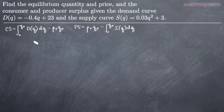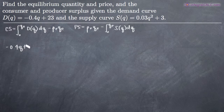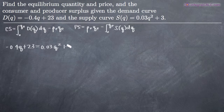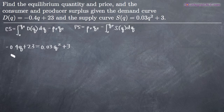The way that we'll do that is by setting the demand and supply curves equal to one another. So we'll get negative 0.4q — this is the demand curve — plus 23, and we'll set that equal to the supply curve: 0.03q squared plus 3. The way we usually end up solving for q is by moving everything to one side so that the equation is set equal to zero and then factoring.